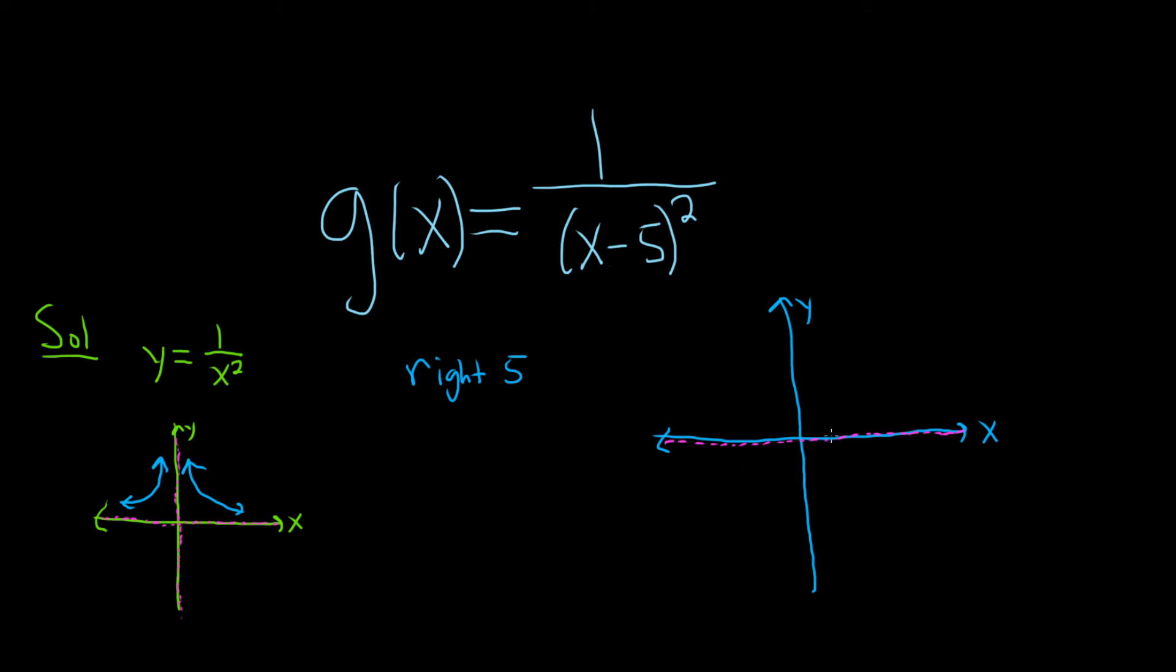But our vertical asymptote is certainly going to go over to 5. So 1, 2, 3, 4, 5. It started at 0, right? So if you go right, it'll end up at 5. There's our beautiful vertical asymptote.